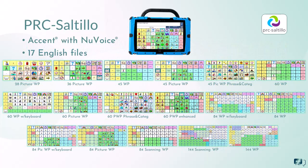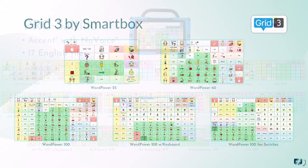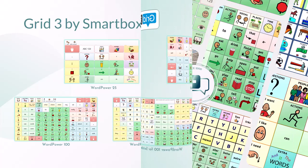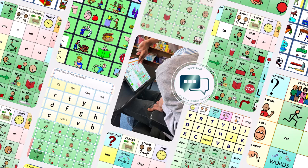The Accent with new voice offers 17 files with page arrangements from 28 buttons to 144 buttons. These vocabularies are programmed using PRC symbols. Word Power files are available on devices with Grid 3 software by SmartBox, with five vocabulary options ranging from 25 to 100 buttons. Word Power offers a wide variety of arrangements to meet the needs of many individuals.